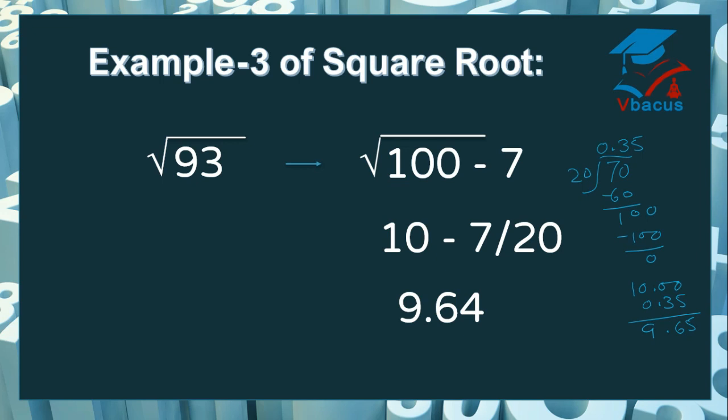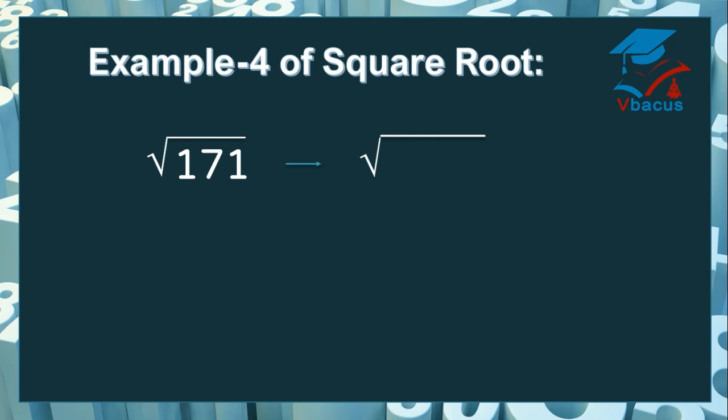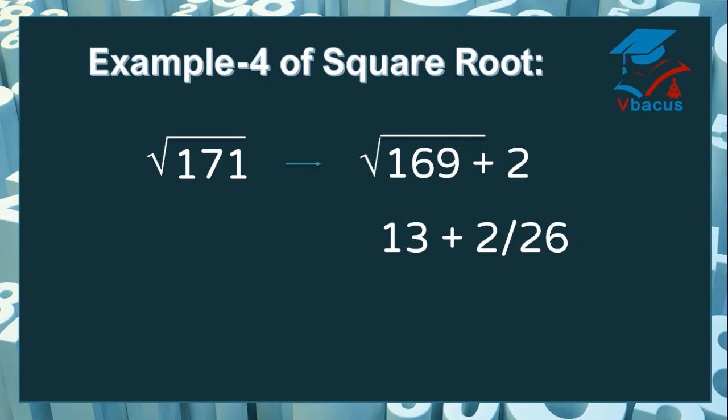Let us take one more example — 171. 171 is very close to 169. If we add 2, then 169 plus 2 equals 171. The square root of 169 is 13. So we have to divide 2 by double of 13, that is 26.